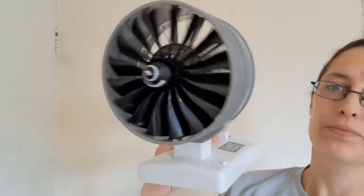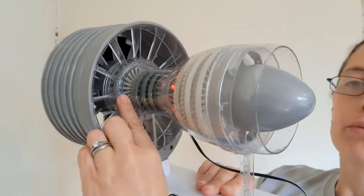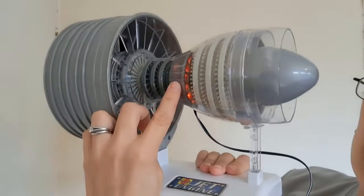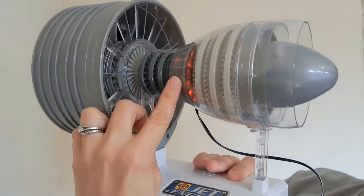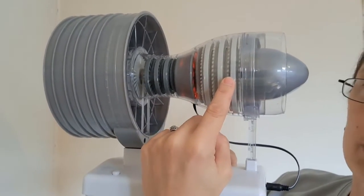But what we can see is we have our fan at the front, and then we've got our low-pressure compressor here, our high-pressure compressor there, we've got LEDs to signify the combustion chamber, high-pressure turbine, and another low-pressure turbine here.